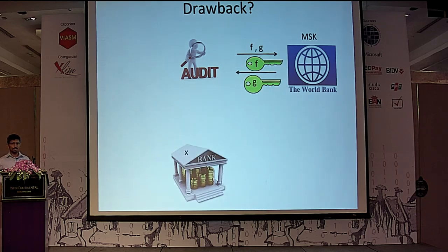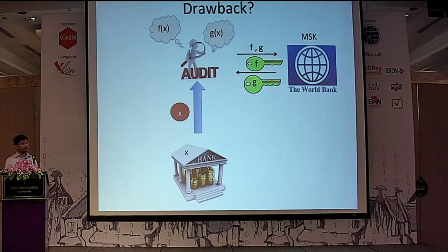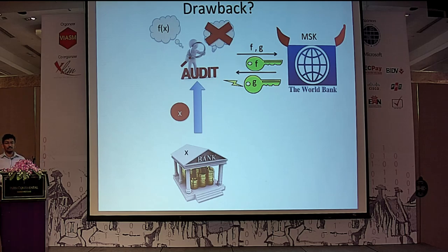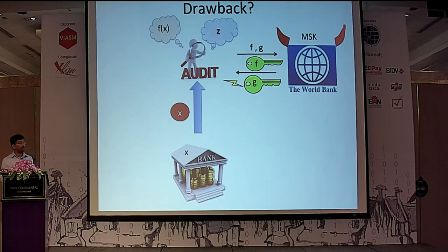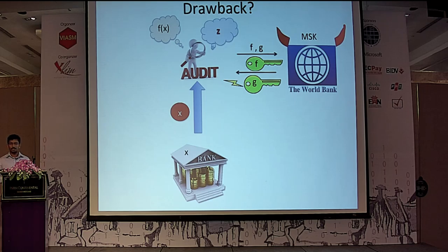Consider a more interesting scenario where it is not the bank that does something wrong — the bank still sends a correctly encrypted value x. The auditor wants to learn f(x) and g(x), but the world bank is corrupt. It gives a wrong function key for g that behaves correctly for all inputs other than x, but fails on x specifically. The auditor has no way of knowing the function key for g is incorrect, and he is confused — he believes the value z he learns is g(x), when it is not. We also want to protect against a malicious authority that generates function secret keys.